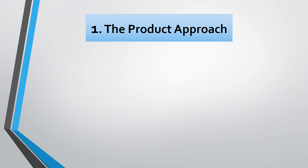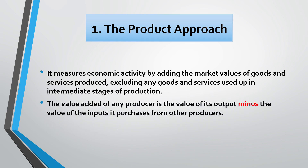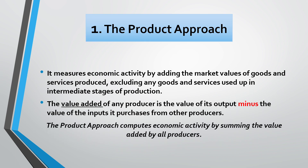The first method is the product approach. It measures economic activity by adding the market values of goods and services produced, excluding any goods and services used up in intermediate stages of production. This approach makes use of the value-added concept. The value-added of any producer is the value of its output minus the value of the inputs it purchases from other producers. The product approach computes economic activity by summing the value added by all producers.